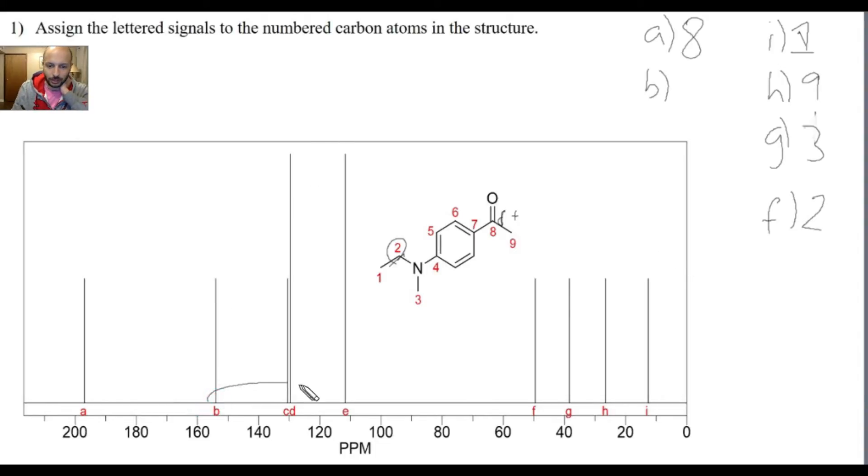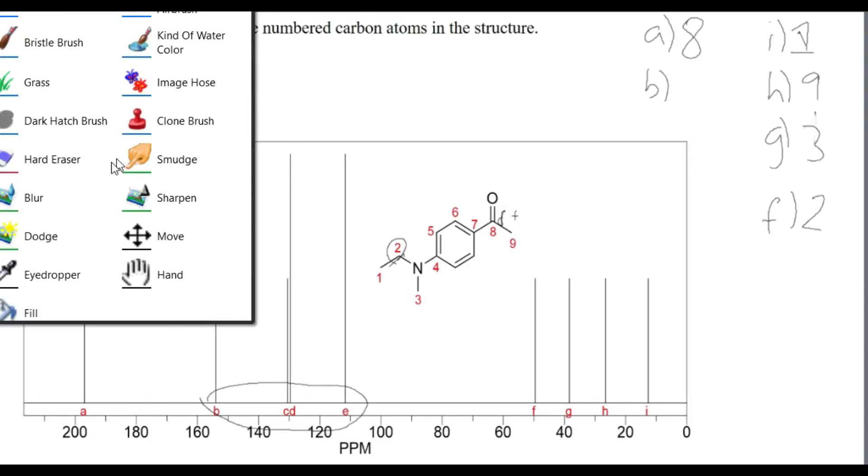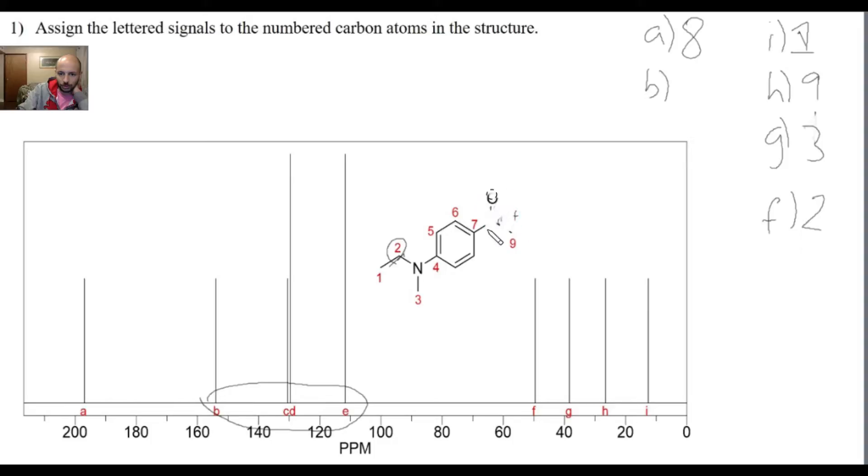Now, these four here are the toughest, because these four peaks here represent carbons in the benzene. How do we solve that? Well, let me just erase the structure first, and I'm going to just redraw it using resonance structures to demonstrate how to assign these.